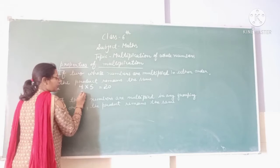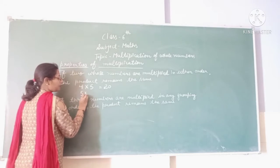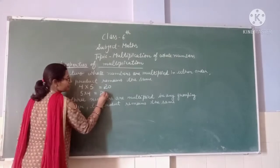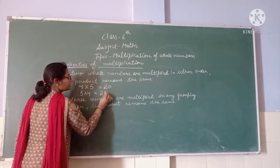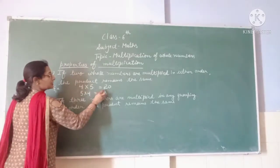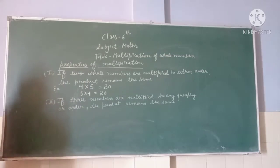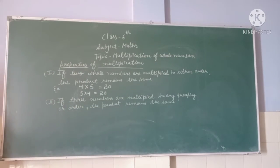Now if we change the order: 5 multiplied by 4 — 5 fours are 20. So the product remains the same when two whole numbers are multiplied in either order. Clear?